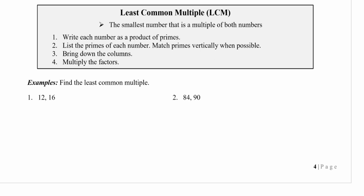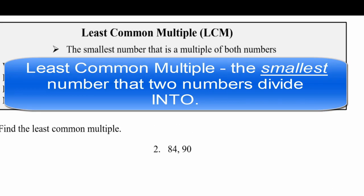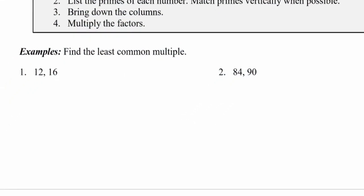We're going to work on how to find the least common multiple between two numbers. We'll use this when we need to change denominators in fractions to a common denominator. The least common multiple is the smallest number that both of your original numbers divide into. For example, with 12 and 16, we're looking for the smallest number that both divide into evenly.